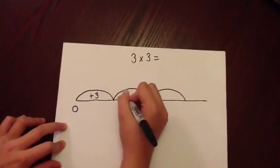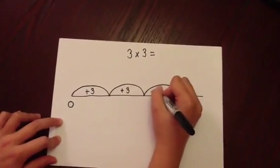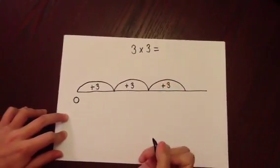It's important to be able to write this clearly inside each jump as this will help the child remember how many to add on each time.